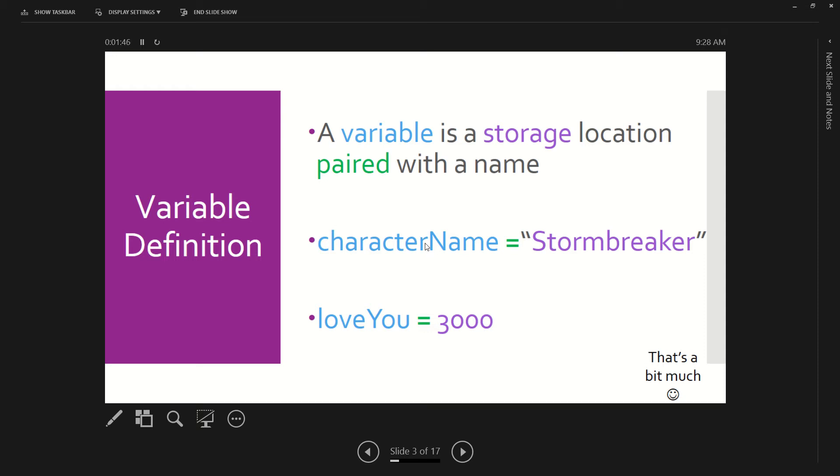Same thing here. The blue is the variable, the purple is the storage or the value that we're trying to store inside the variable. So when we do this, the variable is now able to be used as that variable, as the value that is being stored.